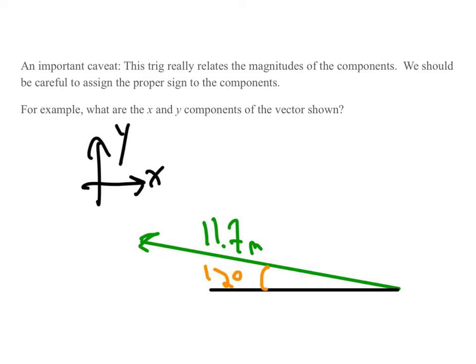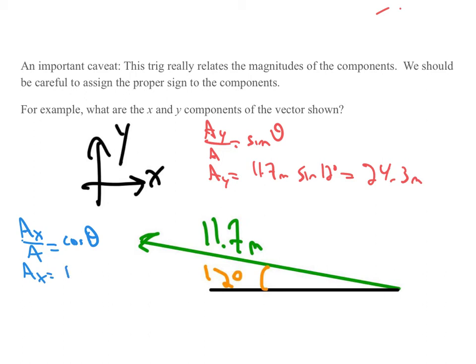For example, what are the x and y components of the vector shown? Some will be easy, right? We can say that a_y over a is the sine of the angle. So I get that a_y is 11.7 meters times the sine of 12 degrees, which turns out to be 24.3 meters. And then if we do a different color, a_x over a is the cosine of the angle. So we get a_x is 11.7... Oops, sorry, this should be 2.43 because it's 11.7. I did this on my calculator as 117.